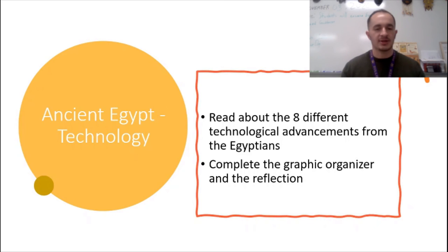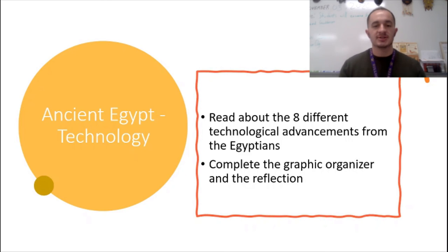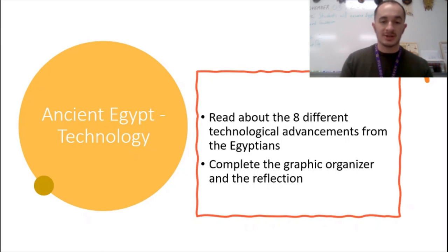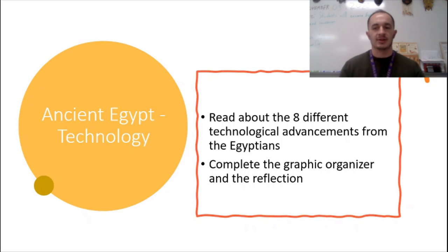The Egyptians had a lot of things that we would just consider normal, but these people were the first group to ever create certain things. So whether it be the 365-day yearly calendar that we have, or the 24-hour day, or even something like makeup that so many people use — these are all things that come from the Egyptians. Without the Egyptians, we likely wouldn't have any of these, or it would have taken a lot longer for someone else to develop something like this.